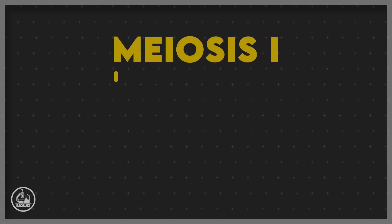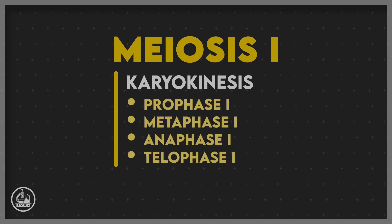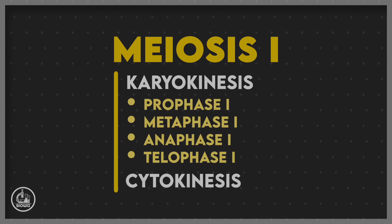The karyokinesis of meiosis I is further divided into prophase I, metaphase I, anaphase I, and telophase I.